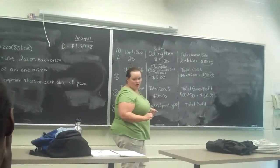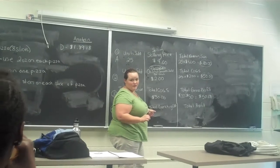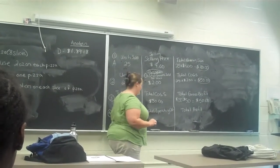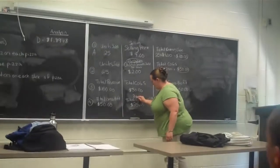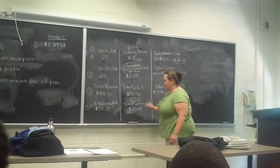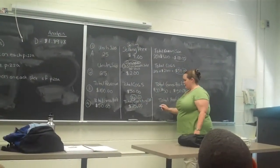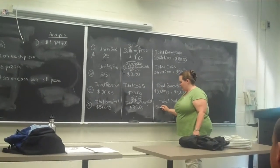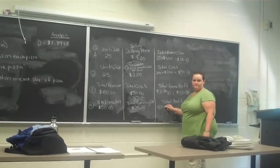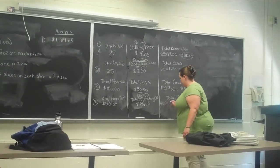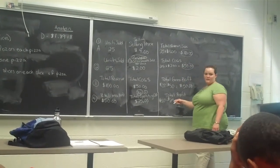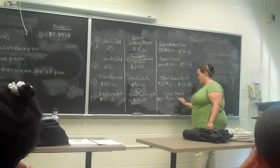They tell us what the operating cost was. How much was the operating cost? $25. And because we pay this operating cost, we need to subtract. So we subtract $50 minus $25. So now what's our total profit? What's $50 minus $25? $25.